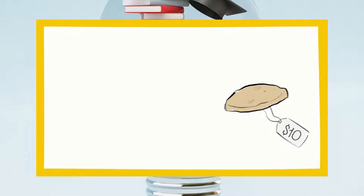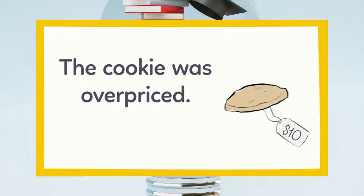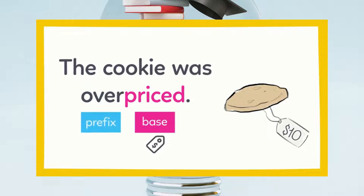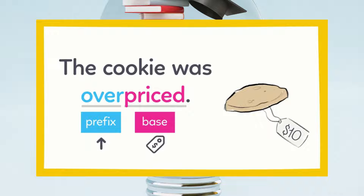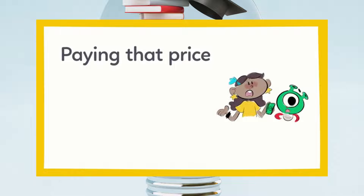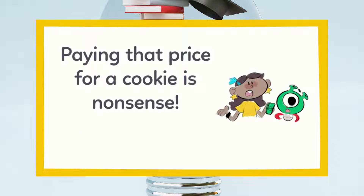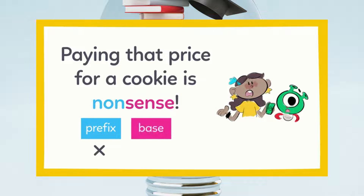And to make matters worse, the cookie was overpriced. Priced is the base word, and it means how much something costs. The prefix over means too much. So overpriced means the price for the cookie was too much. Paying that price for a cookie is nonsense. Non is a prefix that means not. Sense means something is practical or a good idea. So if something's nonsense, that means it is not a good idea.